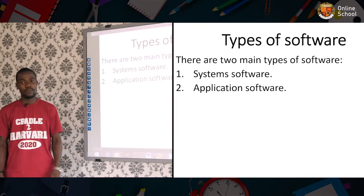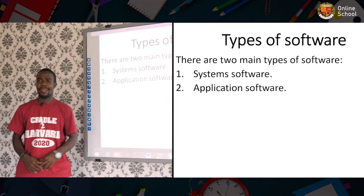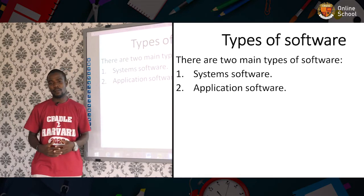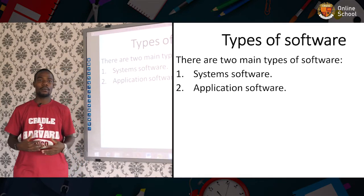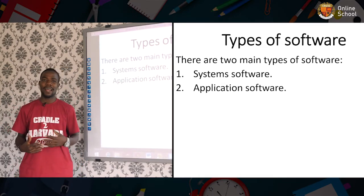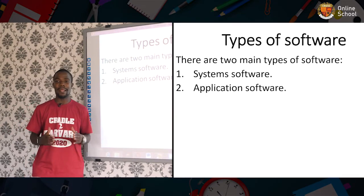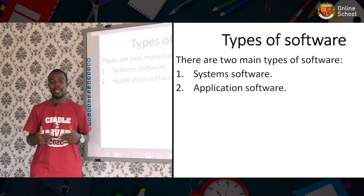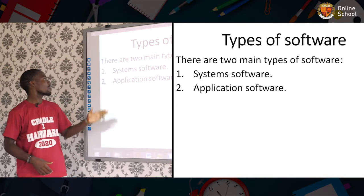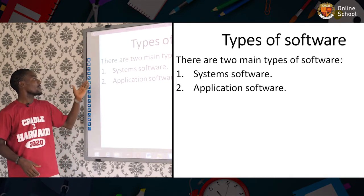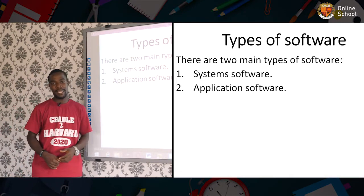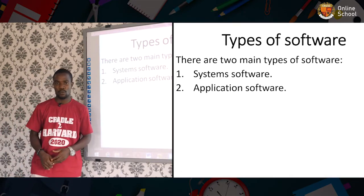Types of software. There are two main types of software. Some different scholars have identified other types, but the main types based on a scheme are: one, system software; and two, application software.